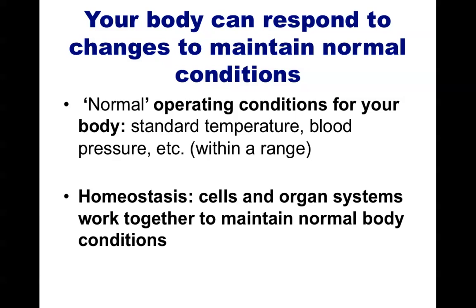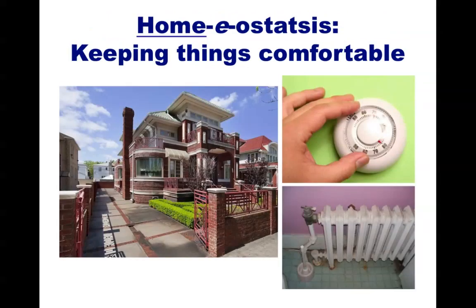One way to remember homeostasis is to think of a home. In a home, you might have several systems built in to keep you comfortable — an air conditioner for when it's too hot, a radiator for when it is too cold, a humidifier or dehumidifier if needed, and lights for when it's dark. These things allow you to keep your home in homeostasis. No matter what the conditions outside, you can keep the inside well lit, at a nice 22 degrees Celsius or about 72 Fahrenheit, and a balanced humidity. Some things, like the radiator, might only turn on when it becomes colder than the set temperature point.